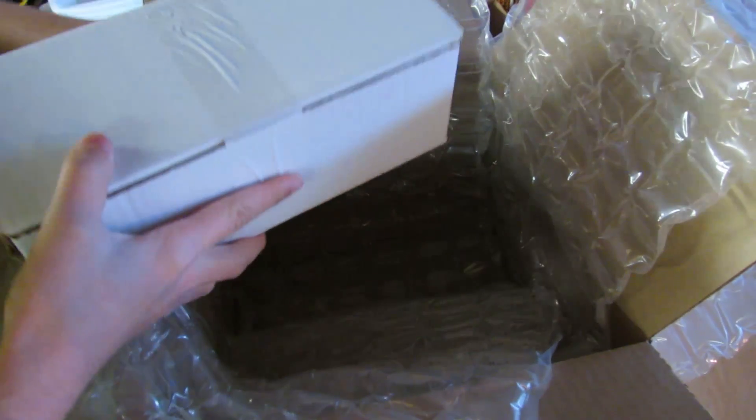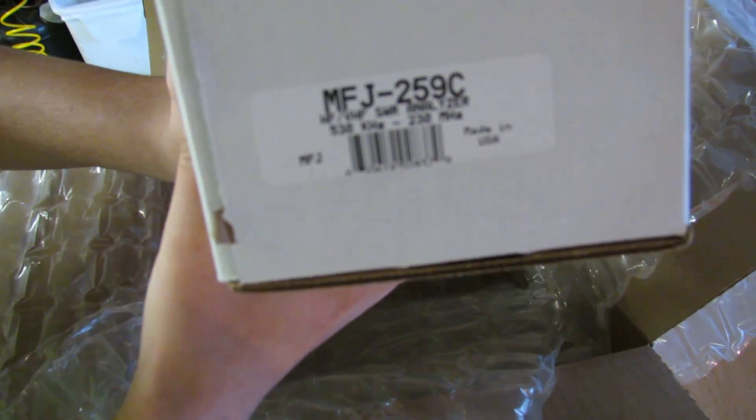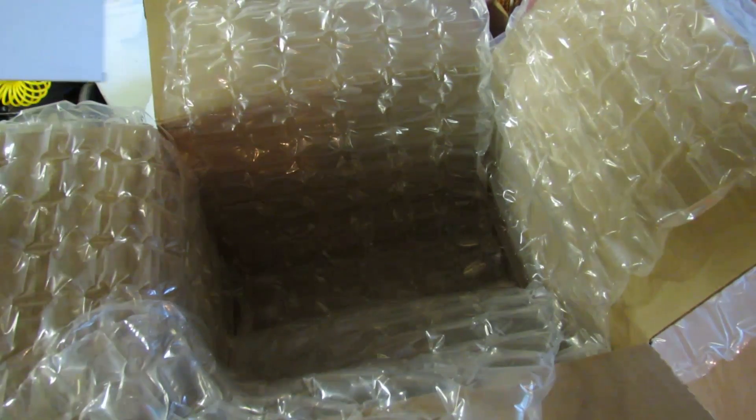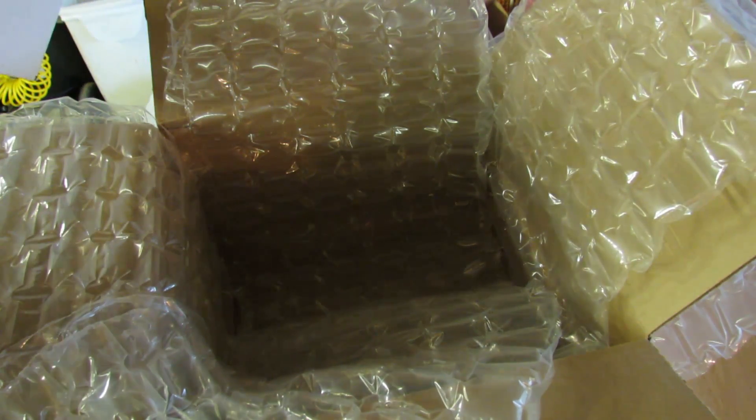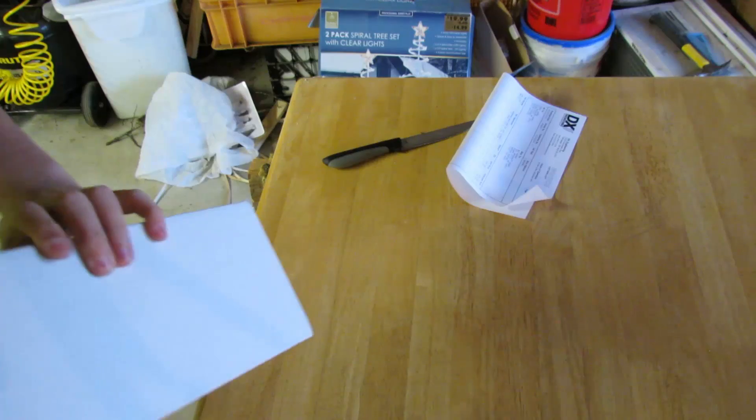And here's what I've been waiting for a long time. The MFJ259C antenna analyzer, 530 kHz to 230 MHz. So it covers all the HF bands along with 2 meters and 220.